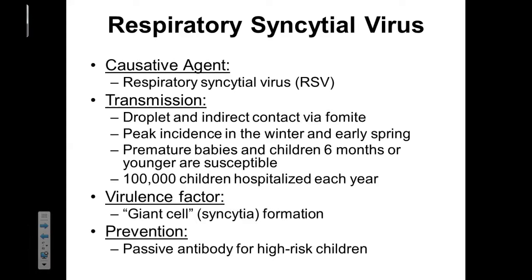The next one is respiratory syncytial virus, or RSV. This virion is capable of being transmitted via direct contact, droplet contact, and indirect contact via fomite. If someone coughs on you directly and expels those droplets onto you, that would be direct contact. We find that there's going to be a peak incidence rate of RSV during the fall and early spring months. This virus preferentially targets young children and premature infants, and every year approximately 100,000 children end up being hospitalized by this disease.